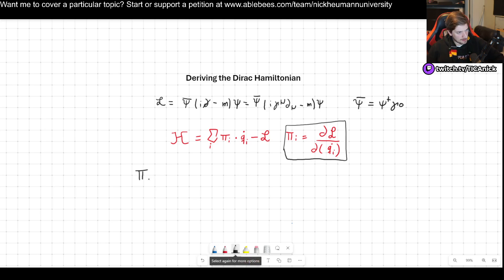So we got pi psi. This would be the derivative of the Lagrangian density with respect to psi dot. Now keep in mind, psi dot is simply d0 psi, right? So let's now plug in what the Lagrangian is.